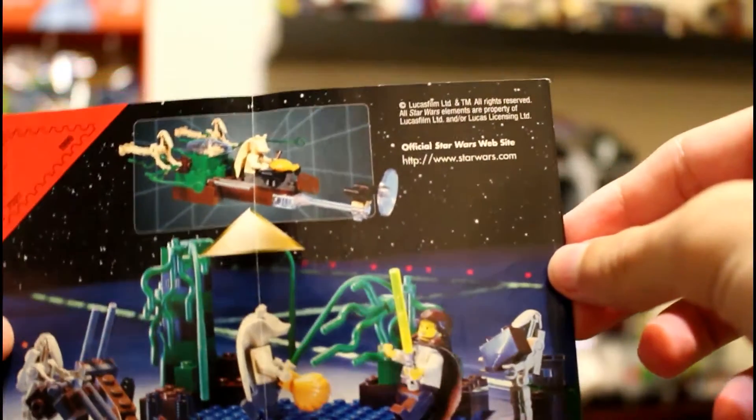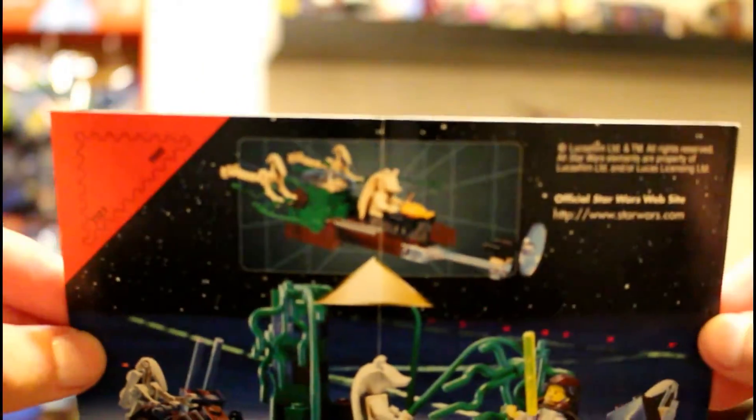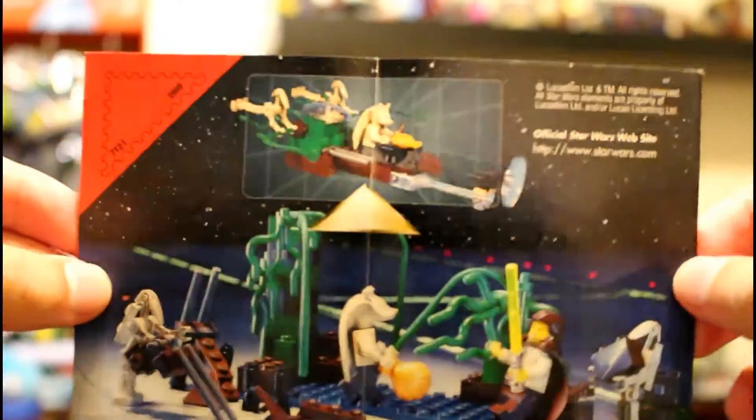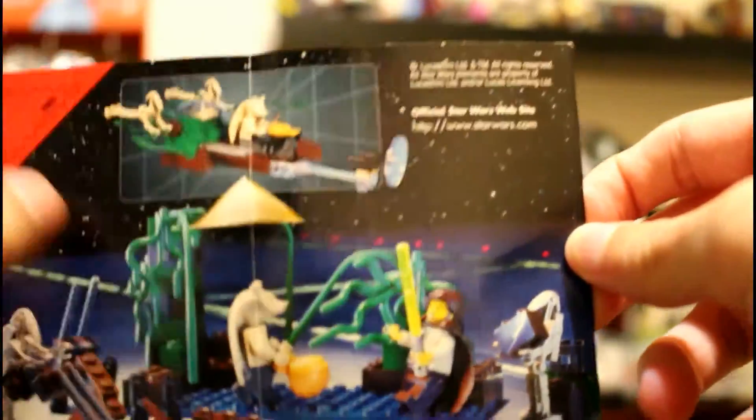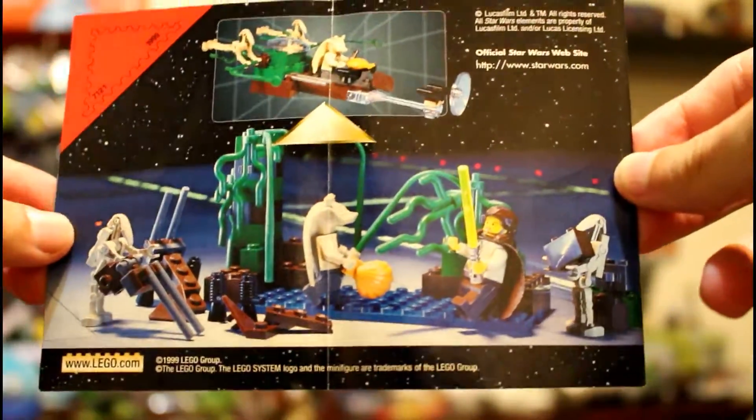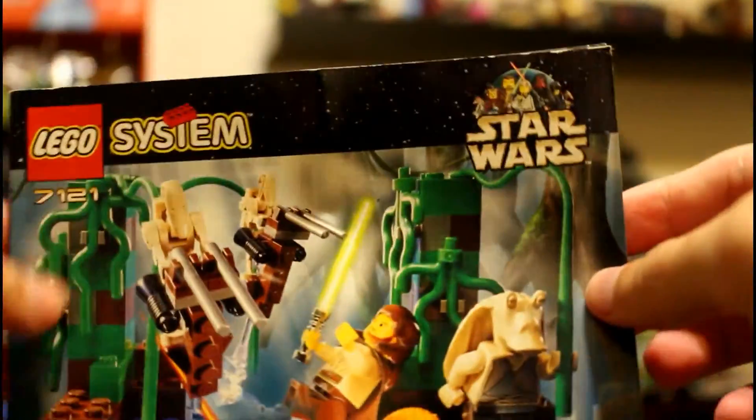This one was really cool at the time because you got 2 battle droids, Jar Jar Binks, and Qui-Gon Jinn. There's this alternate build that you have to build by looking at the picture. So without further ado guys, let's get to this review.